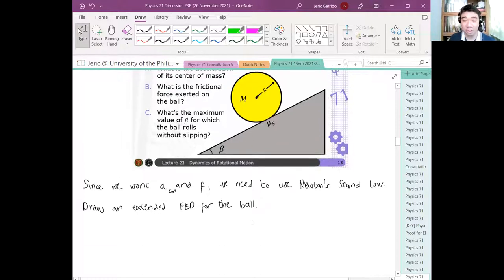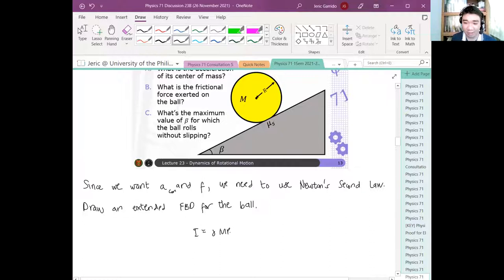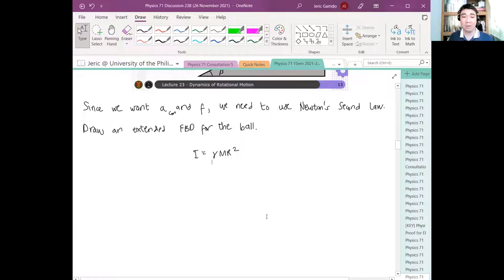Again, the moment of inertia of the ball is I equals gamma MR squared. Why did I make it gamma MR squared? Because remember, we're dealing with balls for rolling without slipping. Usually we use a ball. The main reason is we have two assumptions: the center of mass should be at the geometric center.